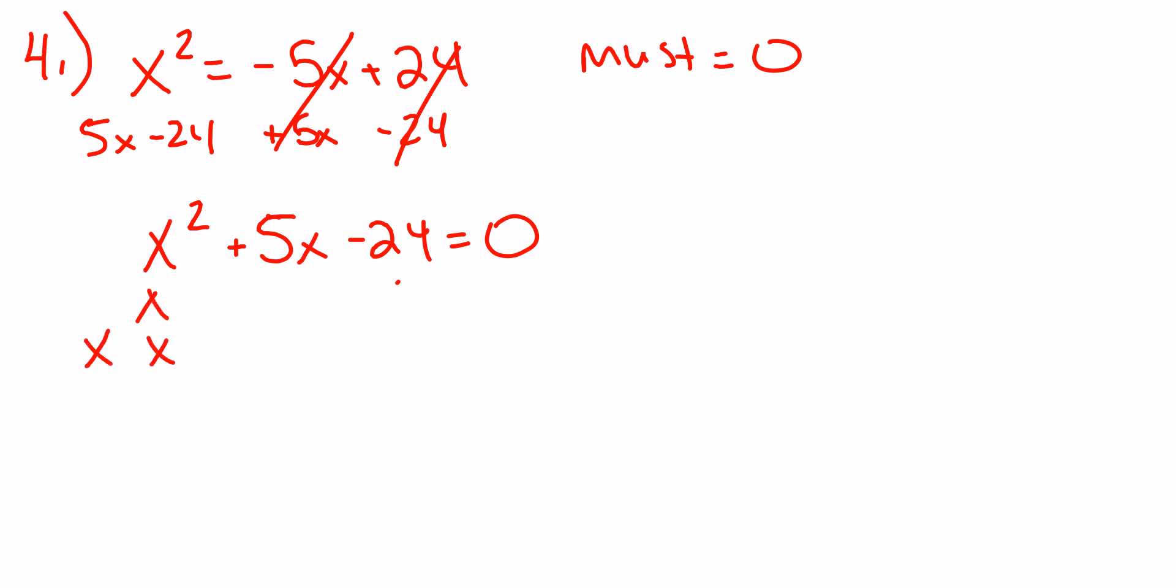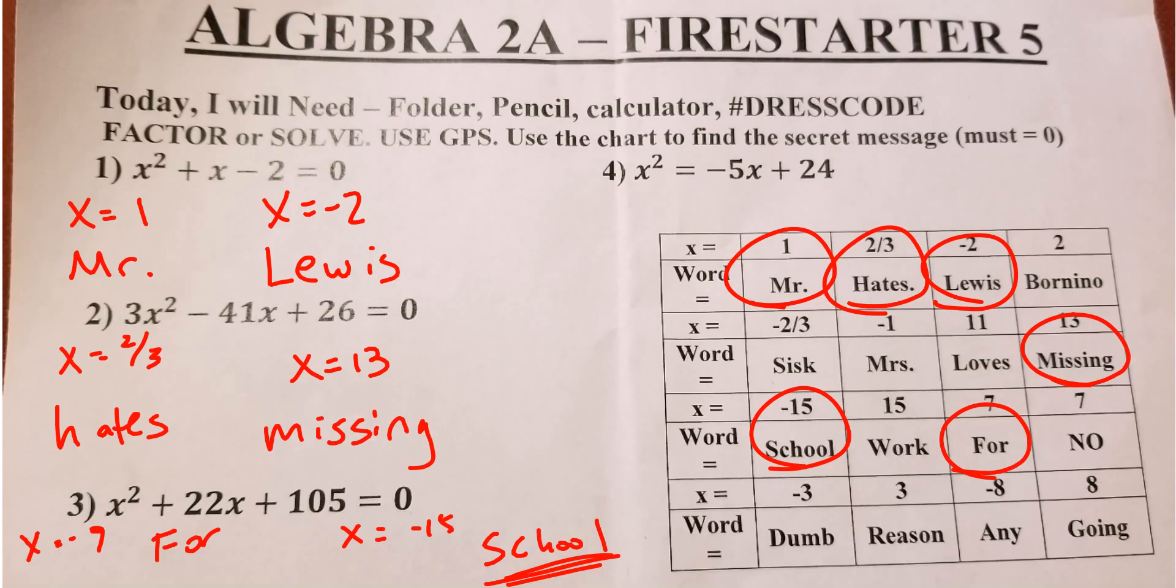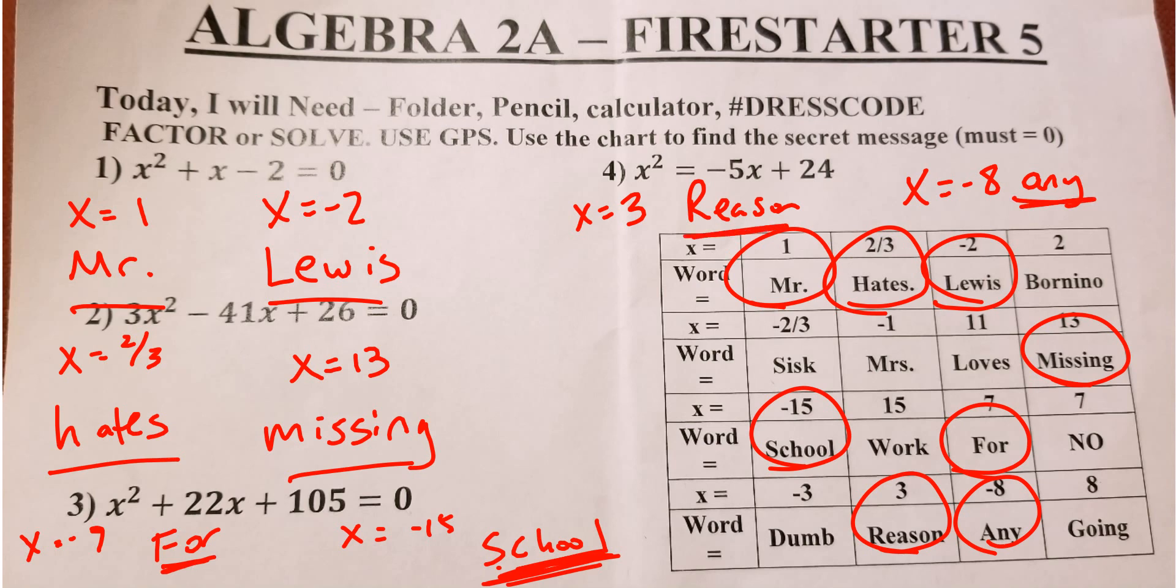Now it's equal to 0. So I say x and x. How do I get -24? Well, -1 and 24, which is not going to help me because I want 5, not 23. -2 and 12 is not going to help me because I don't want 10. -3 and 8 is going to help me because I want 5. So I'm going to say x - 3 in parentheses, x + 8 in parentheses. So now I get to set each parentheses equal to 0. Remember to solve. Add 3 to both sides. x = 3. And then x = -8 by subtracting 8 from both sides. So I'm going to go over there and look for 3 and -8. So I found 3 and -8. So I'm going to say x = 3, which is going to tell me reason. And x = -8 is going to tell me any. So I bet it's going to say Mr. Lewis hates missing school for any reason. And that's my message.